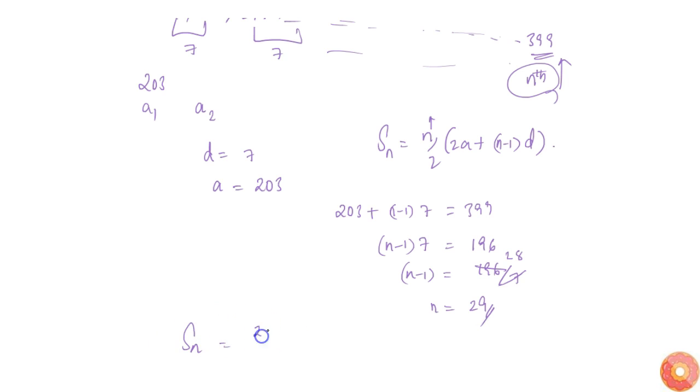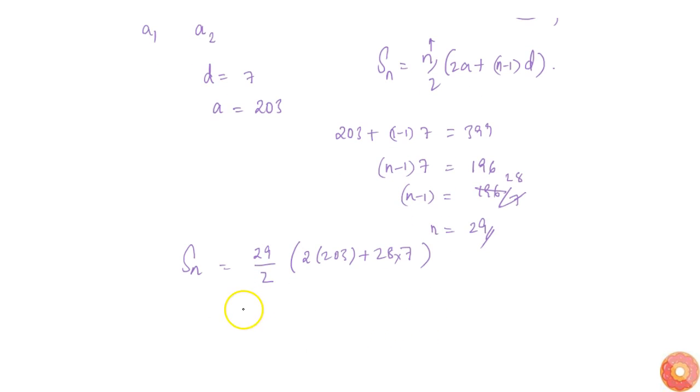Therefore, the sum of the numbers will be Sn equals 29 by 2 into 2a plus n minus 1 into d. That is 29 by 2 into 2 into 203 plus 28 into 7. This becomes 29 by 2 into 203 plus 98.